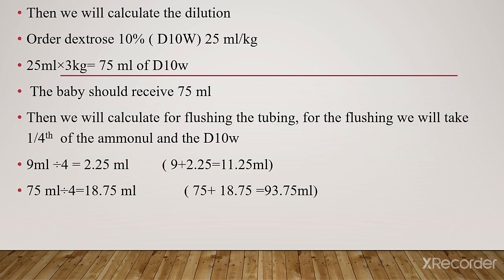We will calculate for flushing the tubing. We take 1/4th of the arginine: 9 ml ÷ 4 equals 2.25 ml for flushing. Total arginine: 9 ml plus 2.25 ml equals 11.25 ml. For dextrose: 75 ml plus 18.75 ml for flushing equals 93.75 ml.